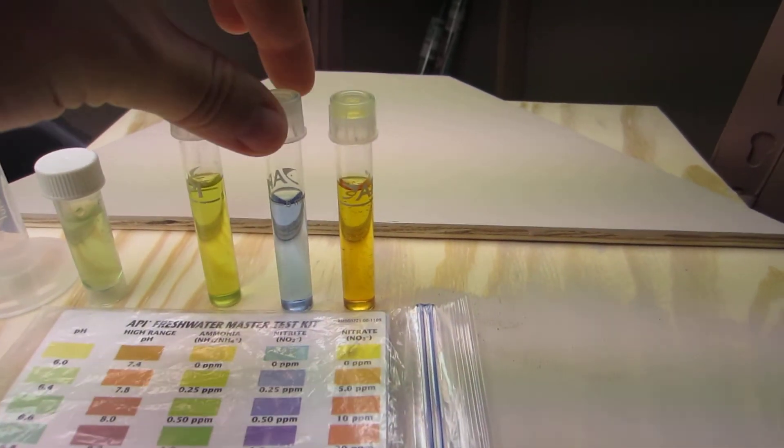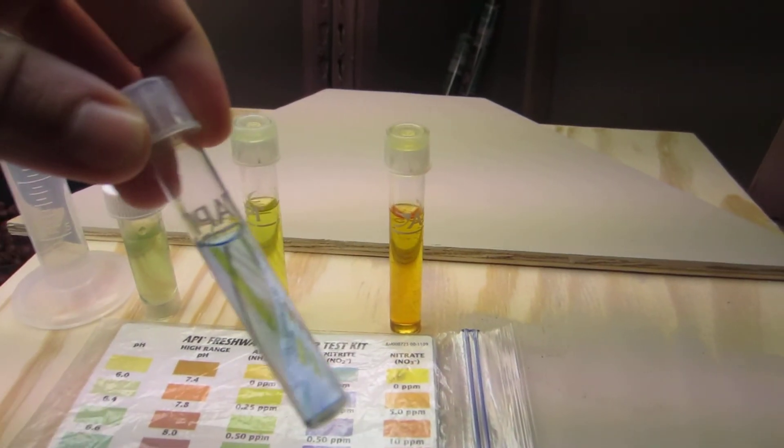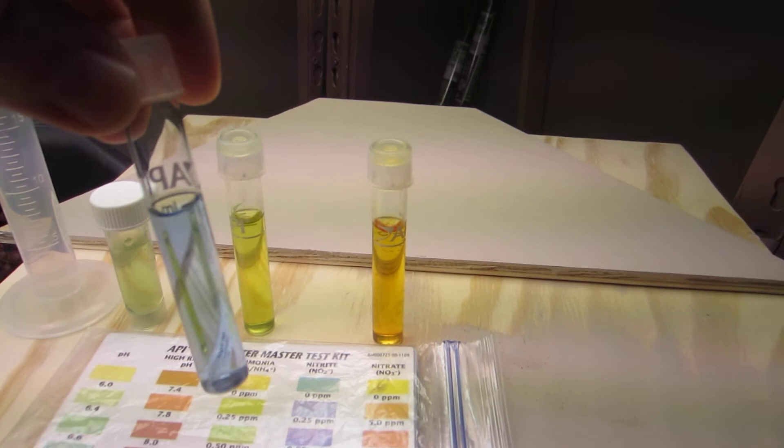And my nitrite has a little purple in there, that's probably about 0.2, maybe 0.15 of nitrite.